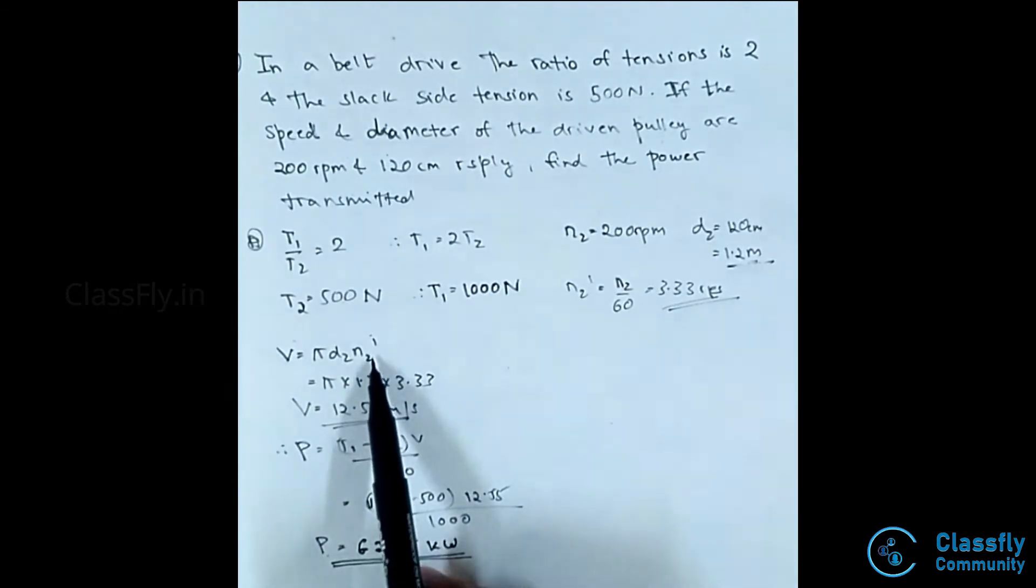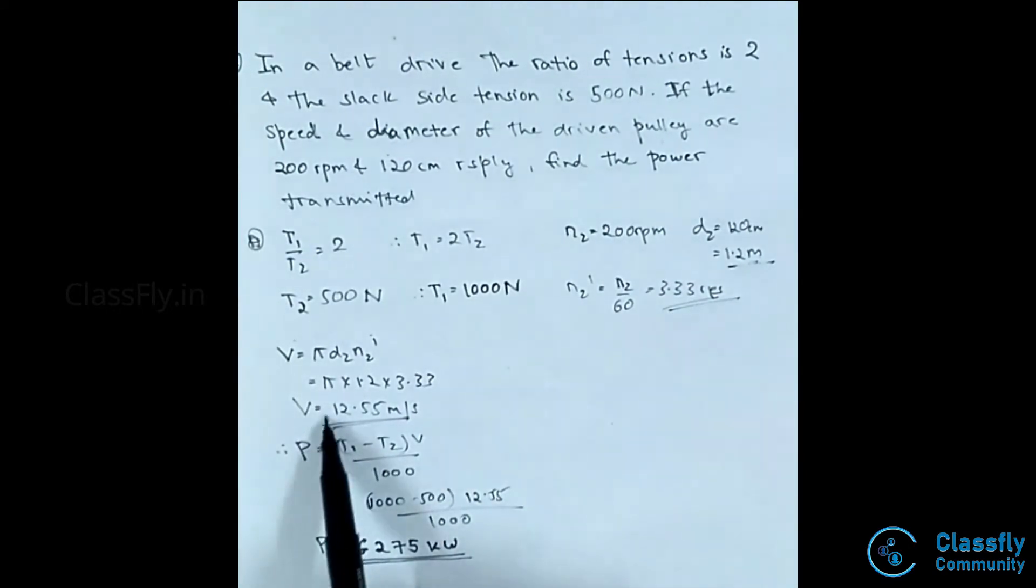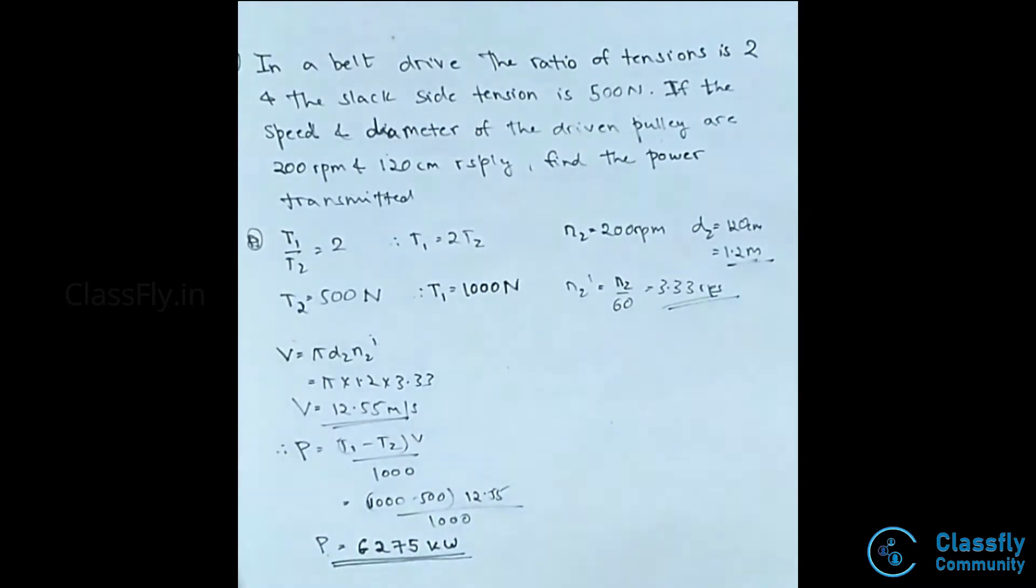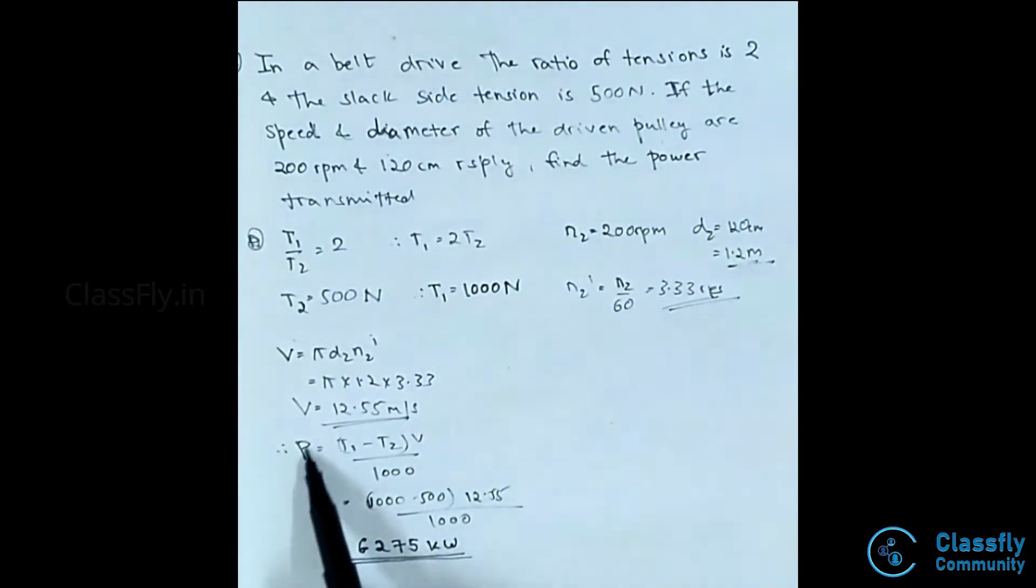The velocity of the belt V can be given as π D2 N2 dash. Substituting the values, we have π times 1.2 times 3.33. Hence, the velocity of the belt is 12.55 meters per second.